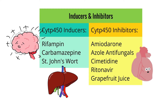In terms of CYP450 inducers, the most common culprits to know are rifampin, carbamazepine, and St. John's wort. Rifampin is a medication used to treat tuberculosis. Carbamazepine is an anti-seizure medication. St. John's wort is a supplement believed to help the liver, though there is no reliable data to support this.